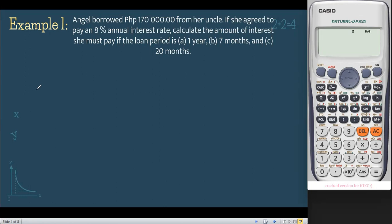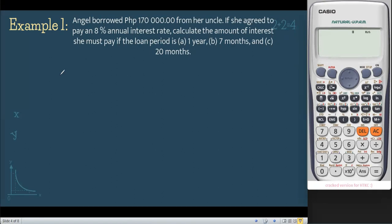Example number 1: Angel borrowed $170,000 from her uncle. If she agreed to pay an 8% annual interest rate, calculate the amount of interest she must pay if the loan period is A, 1 year; B, 7 months; and C, 20 months. So first, let's write down all of the givens. We have the principal, $170,000.